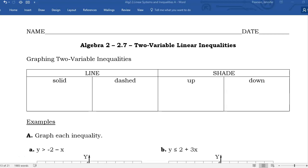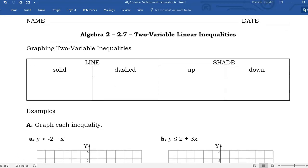Let's talk about what our different shading situations are going to look like based on our different symbols. If you see a less than or a greater than, you will use a dashed line. If you see a less than or equal to or a greater than or equal to, you will use a solid line.